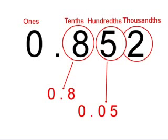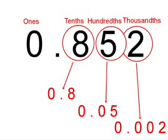The 2 is in the thousandths column. The 2 is actually 0.002. The decimal point means it is smaller than 1.